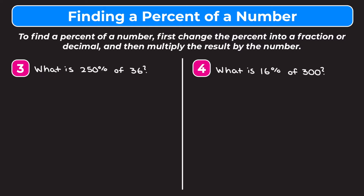Let's do a couple more examples. Example 3: what is 250% of 36? We do the same thing and translate this into an equation. X is our variable, 'is' means equals. We change 250% into a decimal by moving the decimal point two places to the left, giving us 2.5. 'Of' is multiplication and 36 is just a number, so we keep it as is. Now I just need to multiply 2.5 by 36.